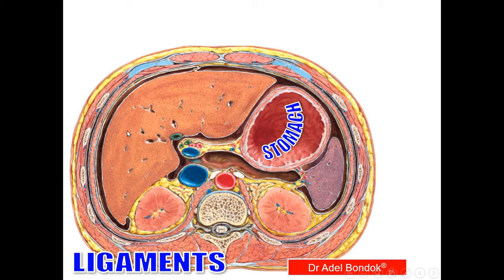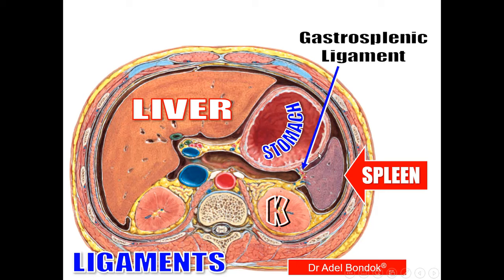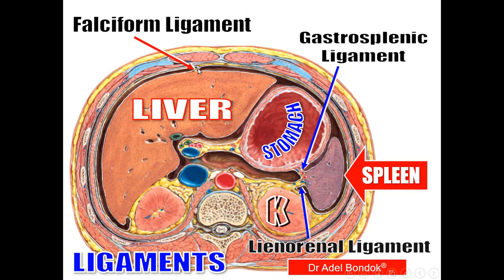In a cross-section of the abdomen showing the liver, stomach, spleen, and kidney: between the liver and the anterior abdominal wall is the falciform ligament; between the stomach and the spleen is the gastrosplenic ligament, also called the gastrosplenic omentum; between the spleen and the kidney is the lienorenal ligament; and the lesser omentum is also visible.